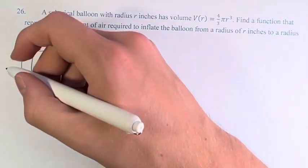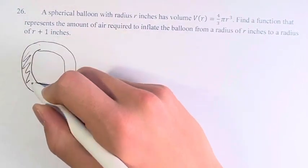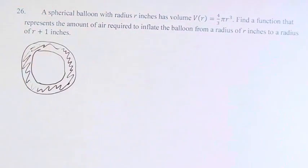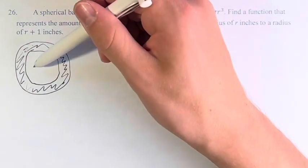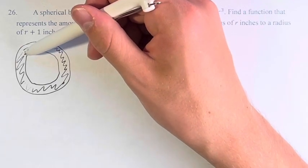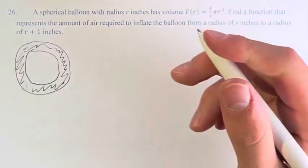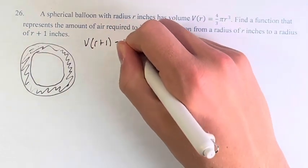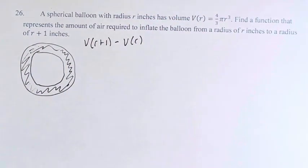That's this rough guess. This area in here is the amount of air that you would have to put into the balloon to inflate it from this to this. And we find that by taking V(r+1) minus V(r), right?